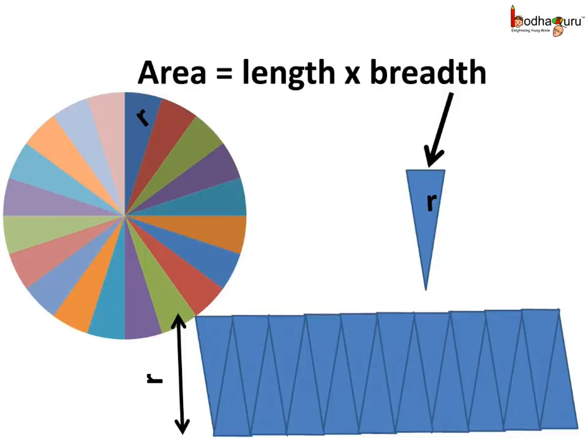And what about the breadth? Look carefully. The breadth is equal to the radius of the circle, say R.